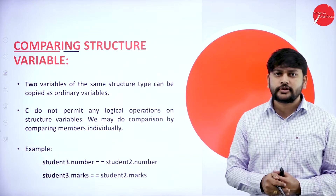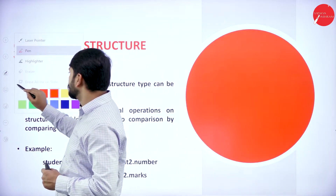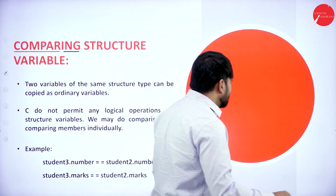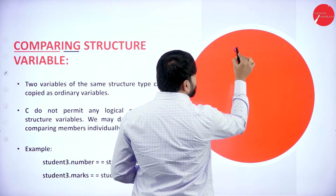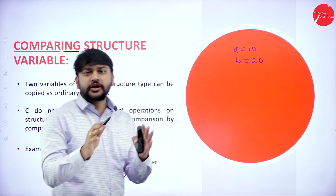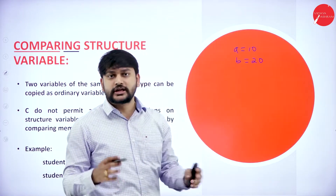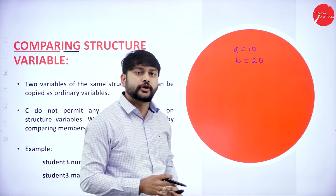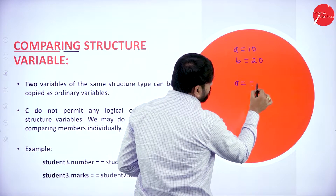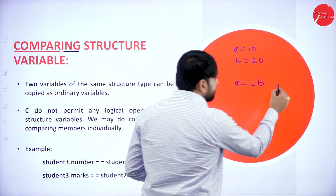Let's look at comparing structure variables. Take an example: let a = 10 and b = 20. I have two variables with values 10 and 20 respectively. How do I compare them? Say a == b. Can I compare it like this? Yes you can. Is it true? No, it is false because 10 is not equal to 20.